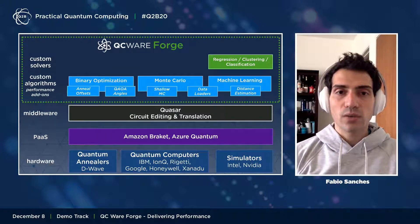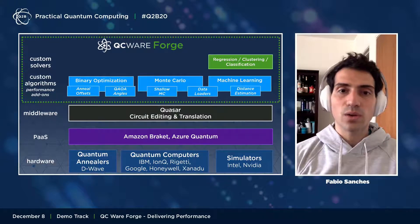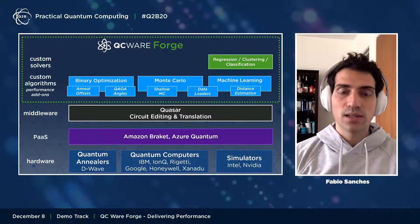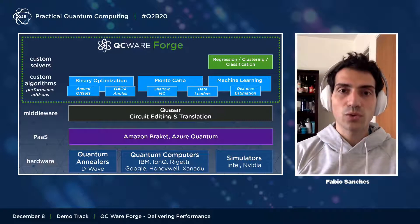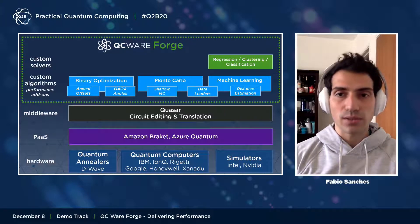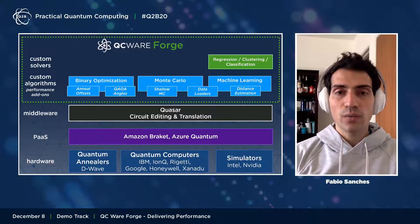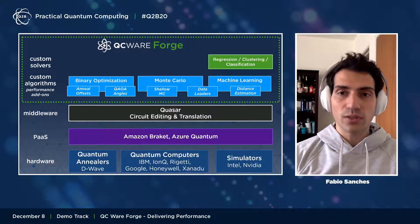This is the high-level architecture of Forge. The main focus is on the quantum algorithms portion, as well as the performance boosts or add-ons developed internally for each of those algorithms. We'll see the binary optimization functionality and the machine learning functionality more closely. We'll soon release Monte Carlo functionality in the next major release. These algorithms are often delivered directly or through custom solvers targeting specific problems.